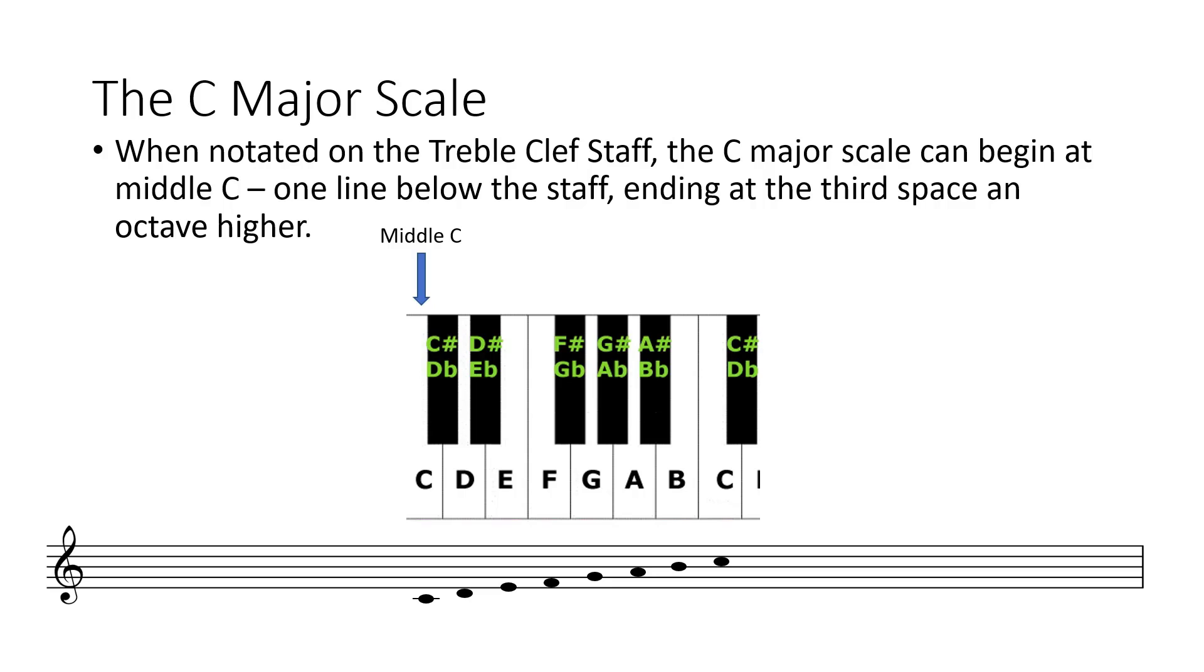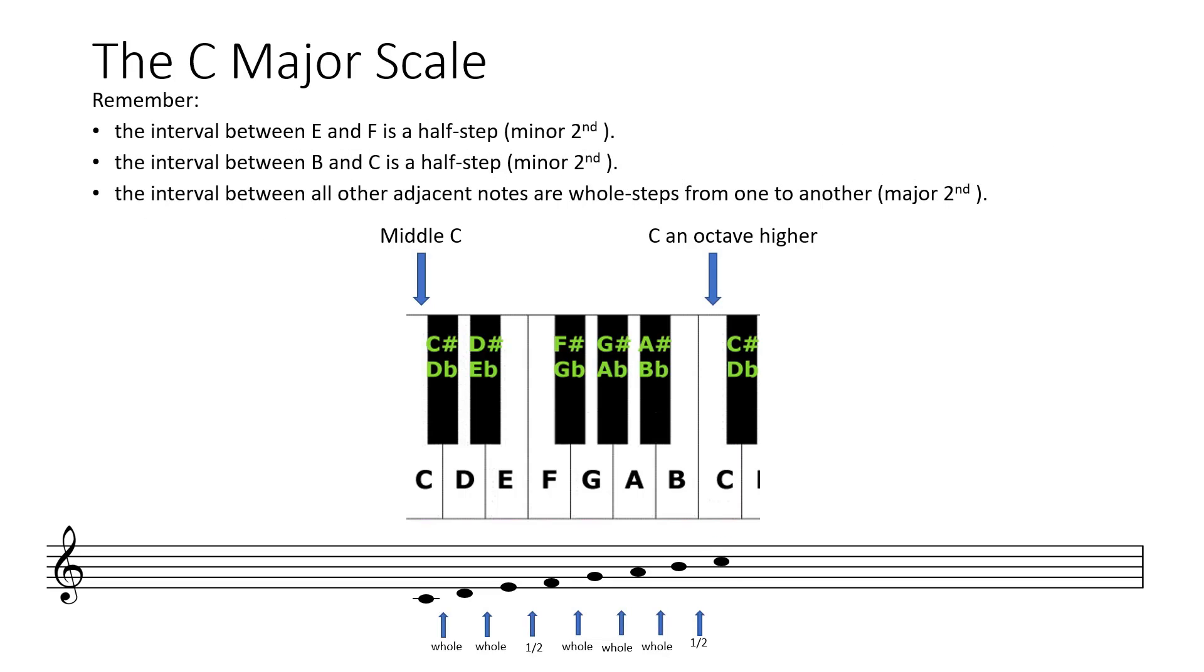When notated on the treble clef staff, the C major scale can begin at middle C, one line below the staff, ending at the third space an octave higher, also C.